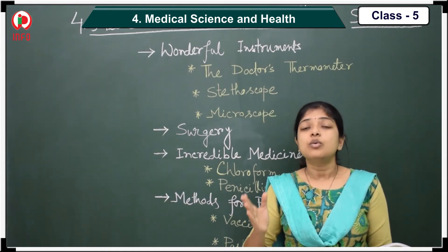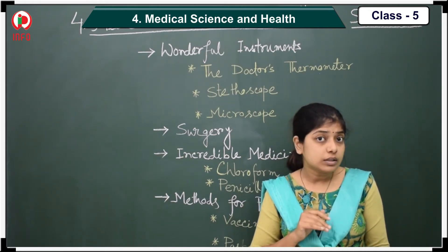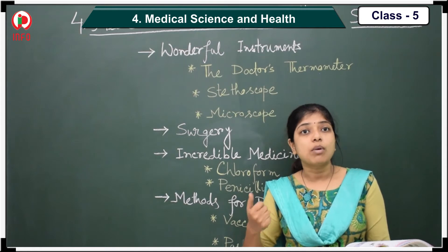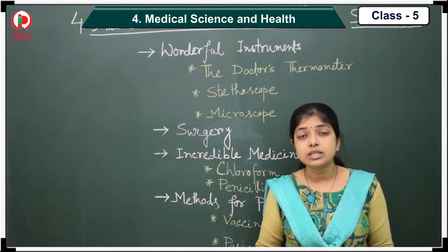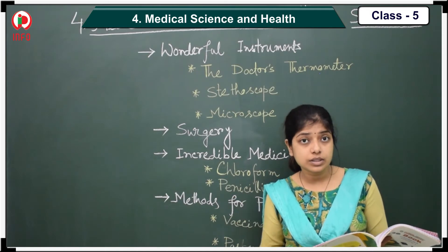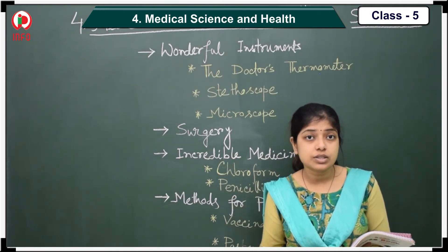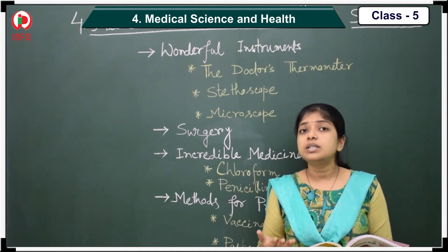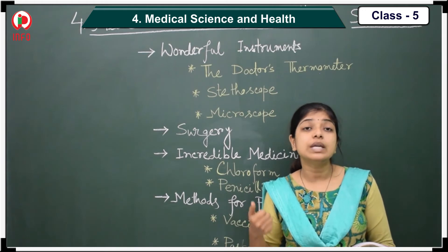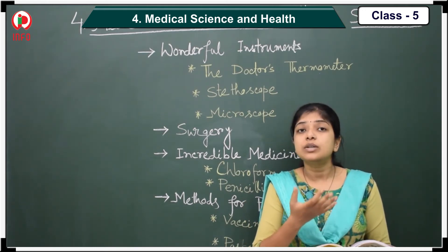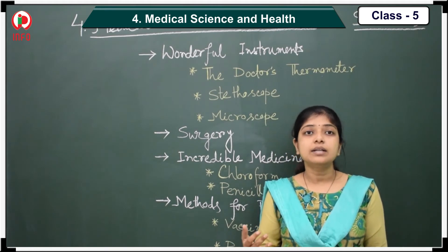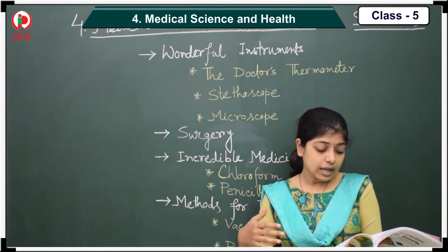Ambroise Paré is known as the father of modern surgery. In the year 1536, he became a master of surgery. Nowadays, different kinds of surgery — like heart surgery, kidney transplantation, and plastic surgery — are very common to us. But in ancient days, these were not possible, as they did not have modern equipment.